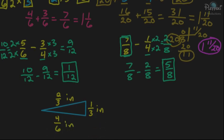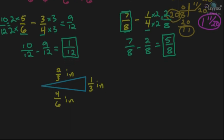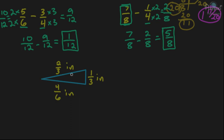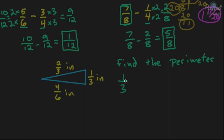The last problem. You're given a triangle with different side lengths: one side is 1 third of an inch, another side is 2 thirds of an inch, and the third side is 4 sixths of an inch. The question is to find the perimeter. The perimeter of a triangle is just the distance around, so we have to add all three sides together. Our problem is going to be 1 third plus 2 thirds plus 4 sixths.